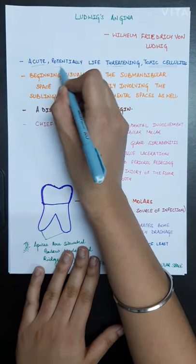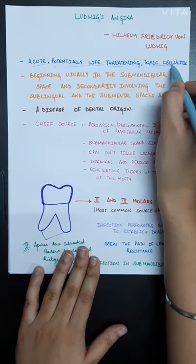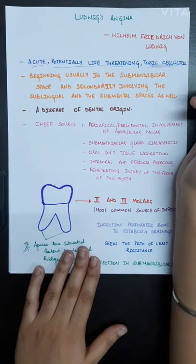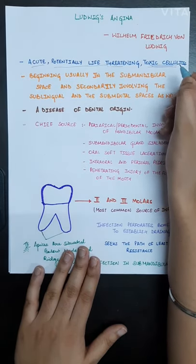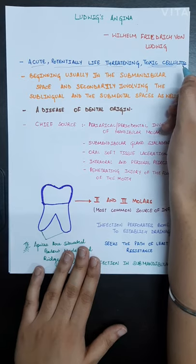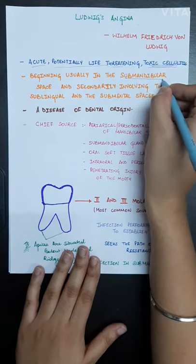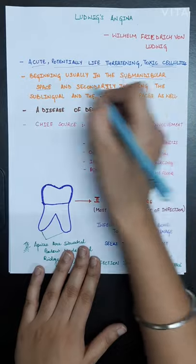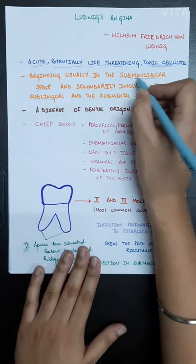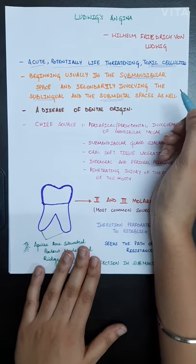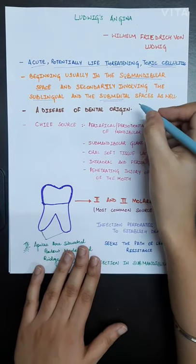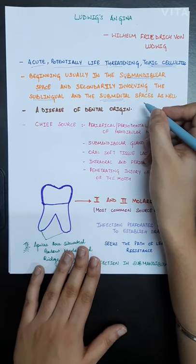It is basically an acute, potentially life-threatening toxic cellulitis in which all the submandibular spaces are involved, such as sublingual space, submental space, and submandibular space. These are basically submandibular spaces: the submandibular space, sublingual, and the submental spaces.